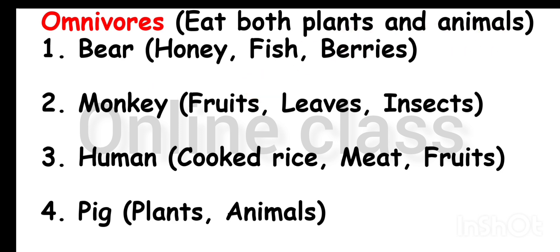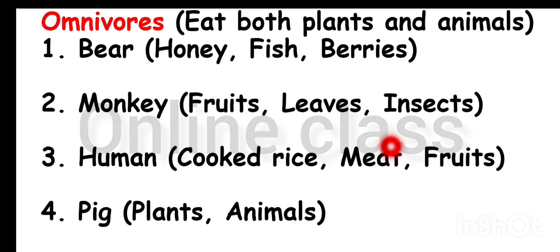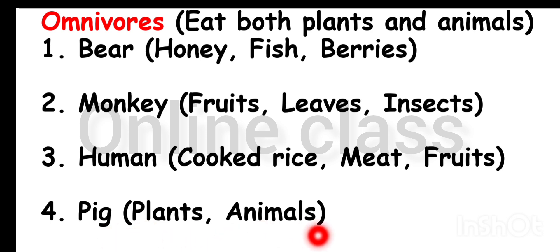Omnivore examples include: bear, monkey eats fruits, leaves, and insects, human eats cooked rice, meat, and fruits, pig eats plants and animals, chicken eats grains and insects, frog eats insects and snails.